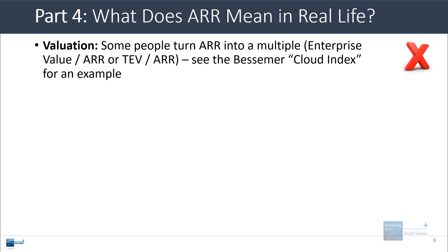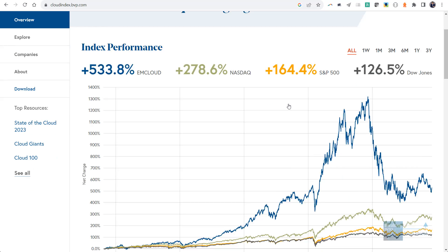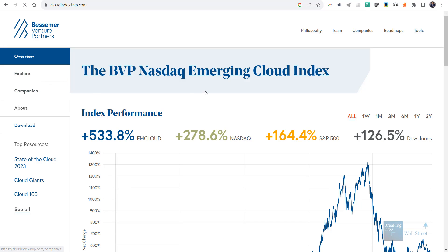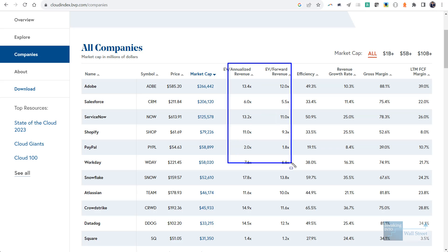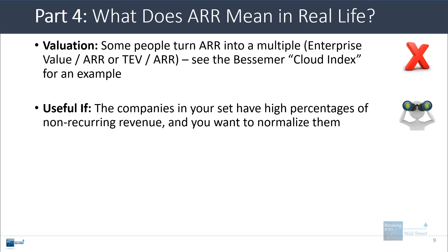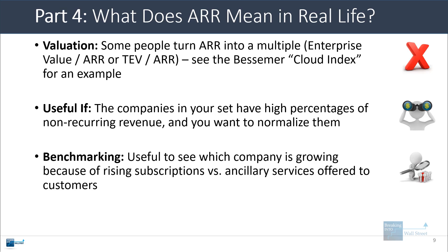Some people will turn ARR into a valuation multiple — it could be enterprise value over ARR, or just TEV over ARR. For a good example of this, Bessemer, this well-known venture capital firm, has their emerging cloud index and they track it versus the S&P and NASDAQ. If you go to companies, you can see they have a listing of companies and they actually annualize each company's revenue. It's not clear if this is the recurring revenue or if they're just taking the most recent quarter and multiplying by four to annualize it, but they're doing something like this and they actually turn it into a valuation multiple. If the companies in your set have high percentages of non-recurring revenue — or one company has 50% but others have more like 10 or 20% — this can be very useful for normalizing the companies in your set. It's also useful for benchmarking to see which company is growing because of increased subscriptions versus other companies that might be growing because of one-off consulting engagements or license sales.